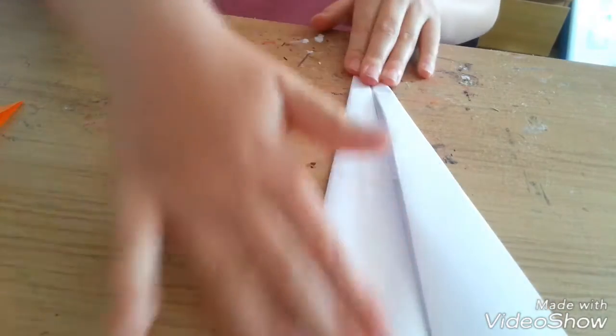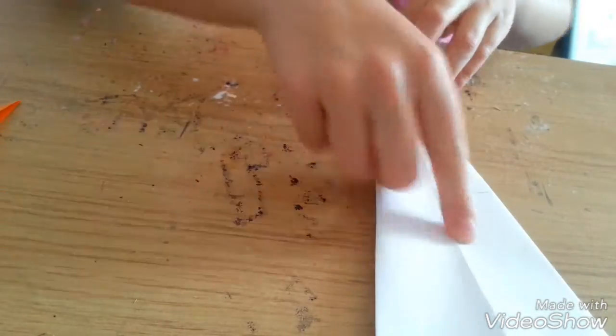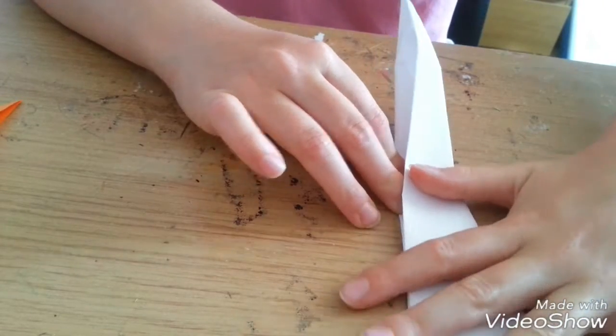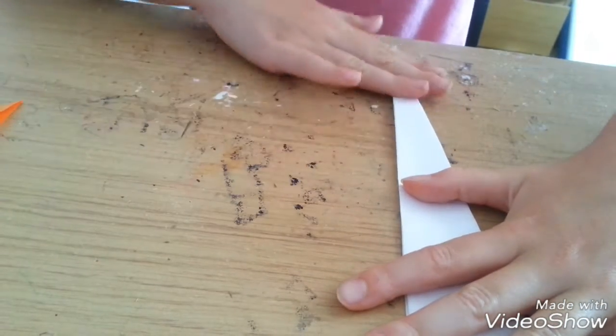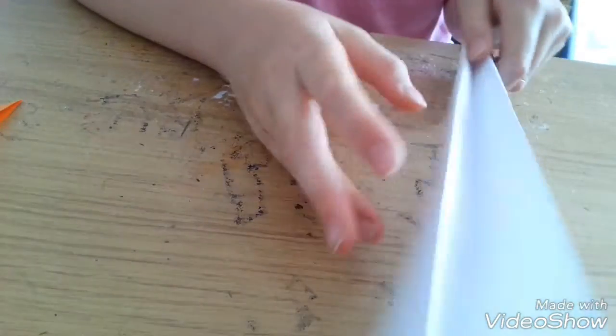As so. Then turn your paper airplane round like this. So as you can see there's a line down there. Then fold it back. As so. Now you will have your paper airplane like this.